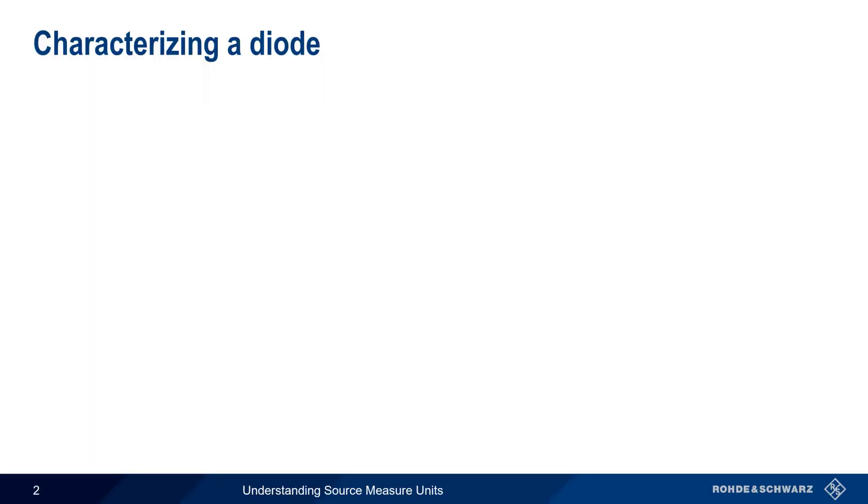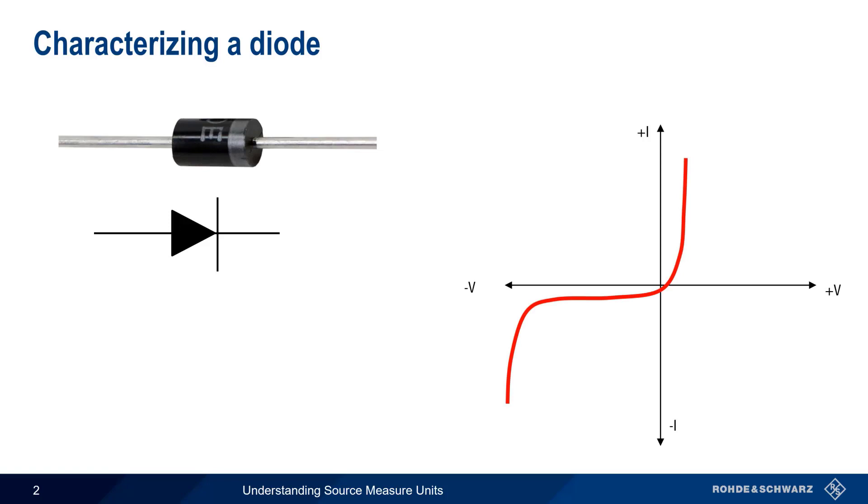In order to understand source measure units, let's start with what would seem to be a simple task, measuring or characterizing a diode. As you probably already know, the characteristics of a diode are normally shown using a so-called IV curve or trace, that is a plot of current, I, versus voltage, V.